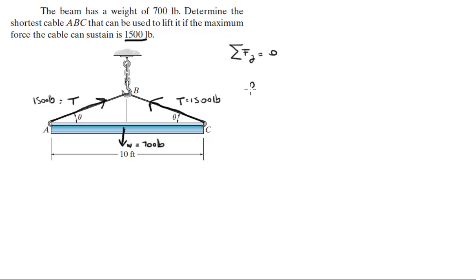So you know that 2T sine of theta, which is this angle right here, minus 700 is equal to 0.